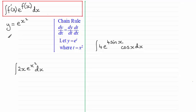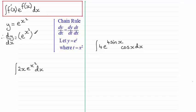For dy/dx, we need dy/dt first. The differential of e to the t is e to the t, so that's e to the t — t being x squared. And that's multiplied with dt/dx. Differentiating x squared with respect to x gives 2x.